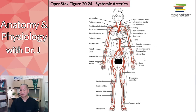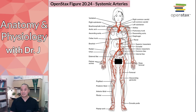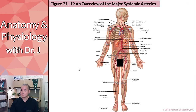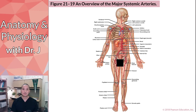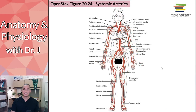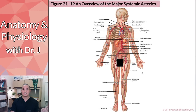For smaller vessels like the mesenteric ones, I'll zoom in as much as possible since they're hard to see in a full-body view. For easier ones like the aorta or brachial artery, I might use a whole-body image. I also uploaded the Pearson version on Laulima — it has a lot more lines and detail.